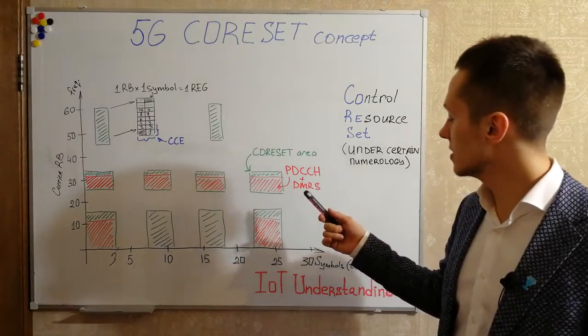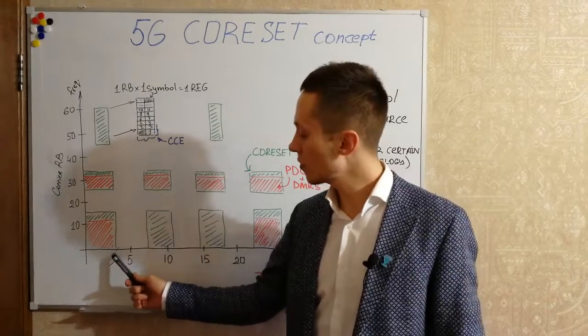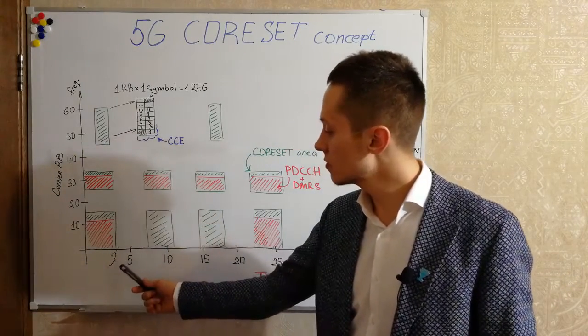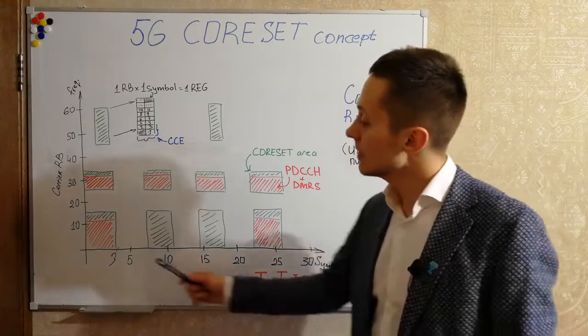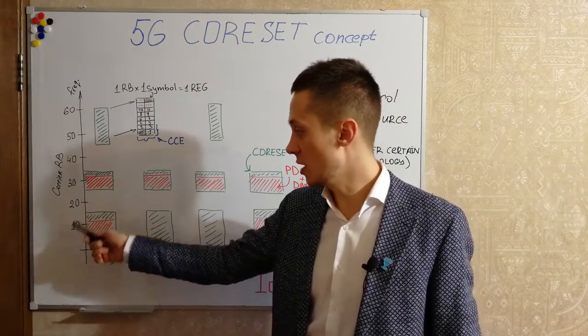The core set consists of one, two or three OFDM symbols in time domain and many resource blocks in frequency domain.